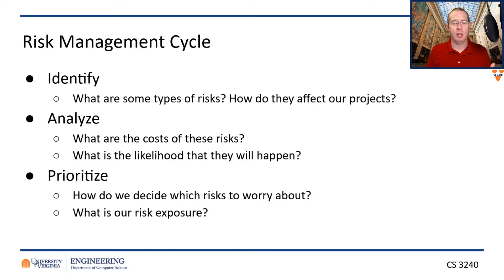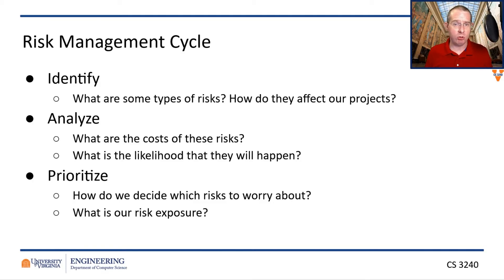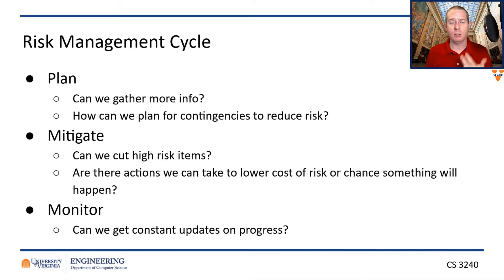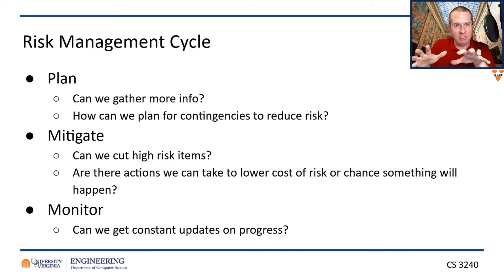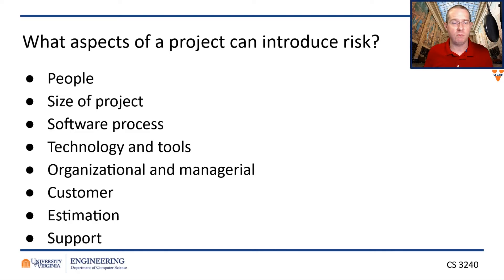So: identify your risks, analyze their likelihood of occurring, prioritize which ones you should care about more, plan for those risks and try to gather as much information as you can, mitigate the risk by moving activities away from the risk exposure area, and then monitor to see if you can figure out what's going to happen. So what are the things that can create risk in a project — particularly in our project?